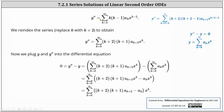Now that we have the second derivative, we want to re-index the sum so it starts at k equals zero, not k equals two. To do this, we replace k with k plus two, which is shown here on the right in blue. If we replace every k with k plus two and simplify, we have y double prime equals a sum from k equals zero to infinity of k plus two times k plus one times a sub k plus two times x to the power of k.